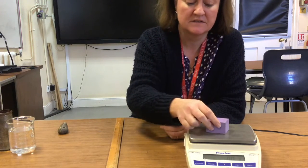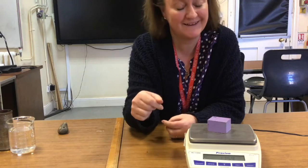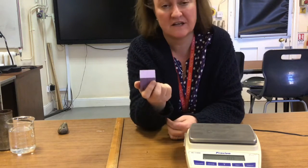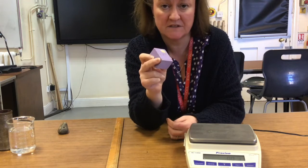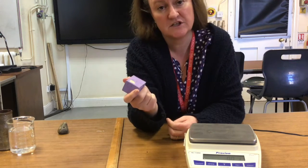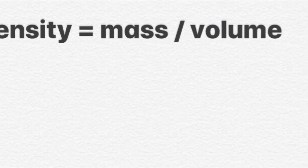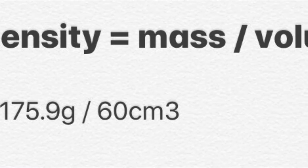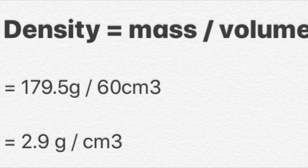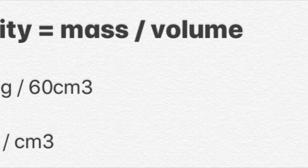So we need the mass: 175.9 divided by 60. Can you do that on the calculator to find the density of this object in grams per centimetre cubed? So using our equation — density equals mass divided by volume — the mass was 175.9 grams and the volume was 60 centimetres cubed. So 175.9 divided by 60 gives us 2.9 grams per centimetre cubed. The density of the block was 2.9 grams per centimetre cubed.